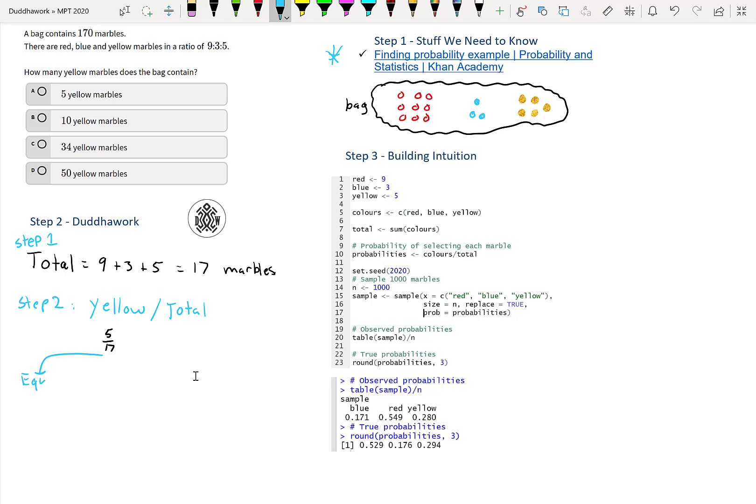So equivalent fraction, but this method won't always work. We have 5 over 17, and we need over 170. So it's easy in this case that it's times 10, and times 10 on the top. Then we would get 50 over 170, which means there's 50 yellow marbles. Therefore we conclude that it's this one.